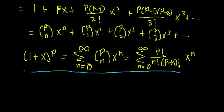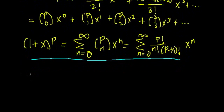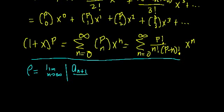While we're at it, let's check the convergence of this using the ratio test. We define rho as the limit as n approaches infinity of the absolute value of the (n+1) term in the series divided by the n-th term, and we know the series converges when rho is less than one.